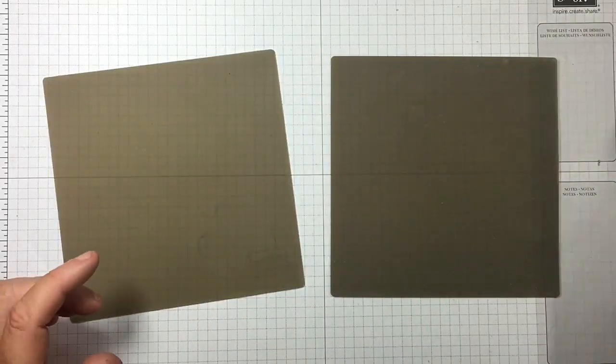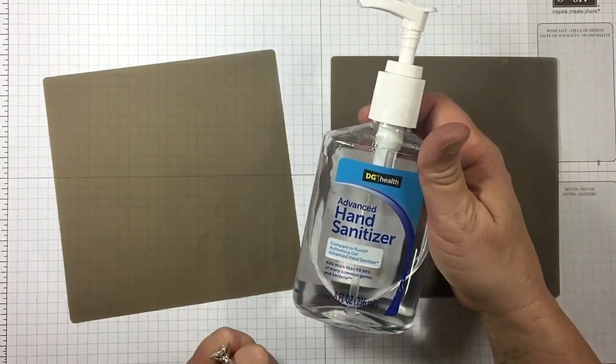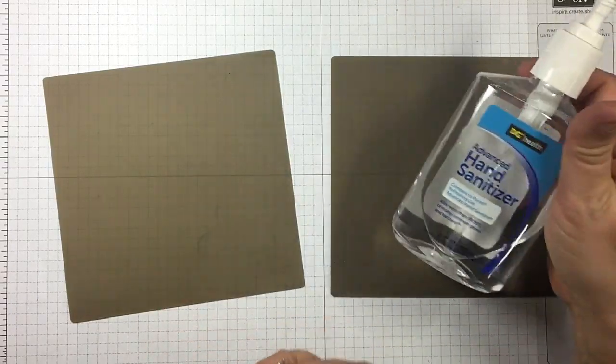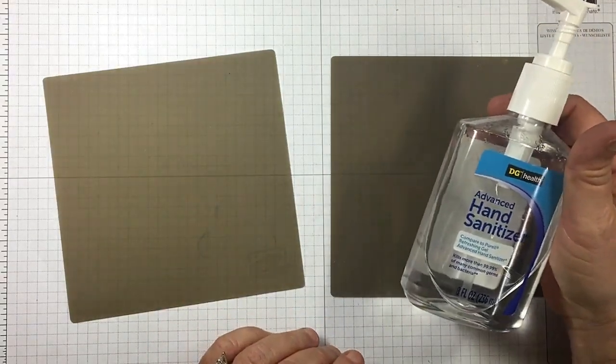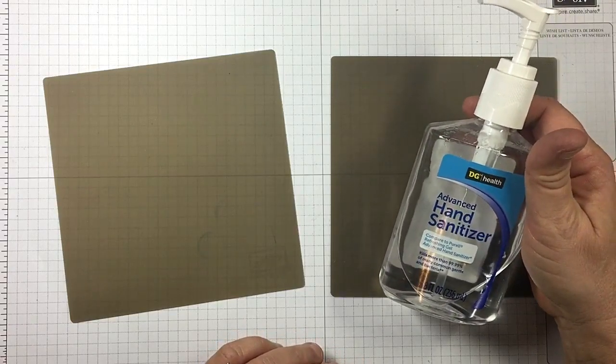Advanced hand sanitizer? Really, it's just cheap hand sanitizer. So that's the easiest way to clean your silicone mat when you use adhesive on it. I hope you guys enjoyed today's tip video.